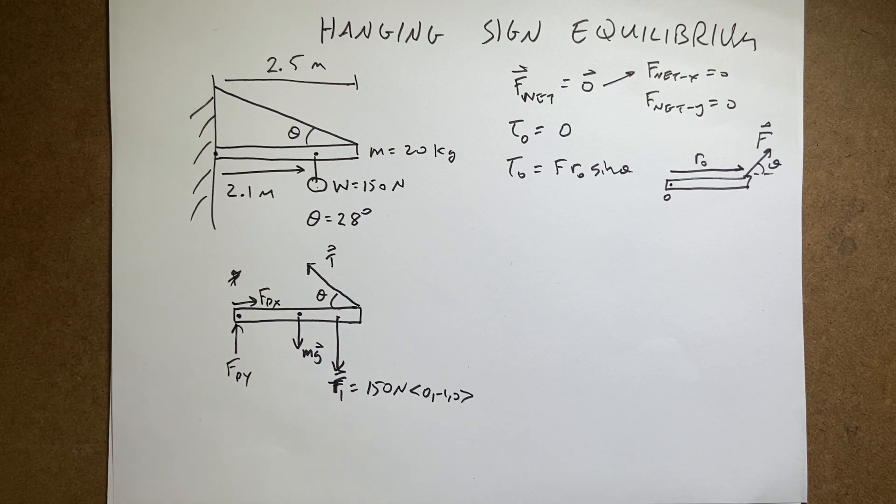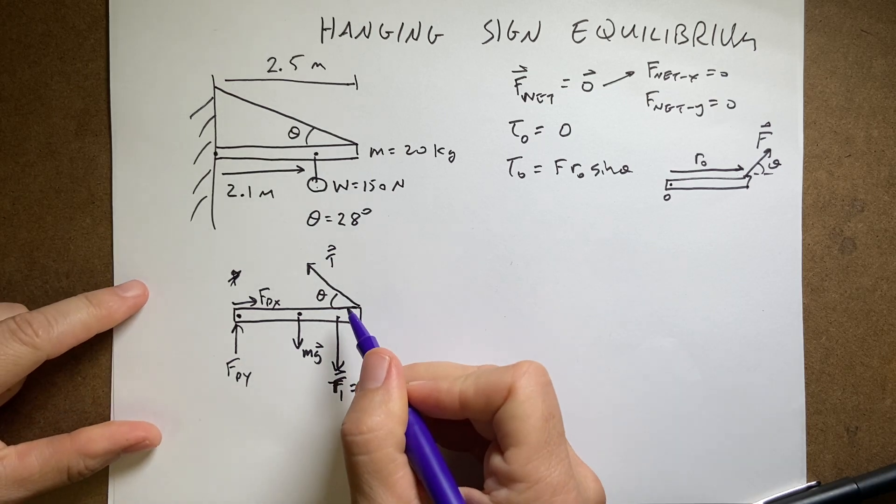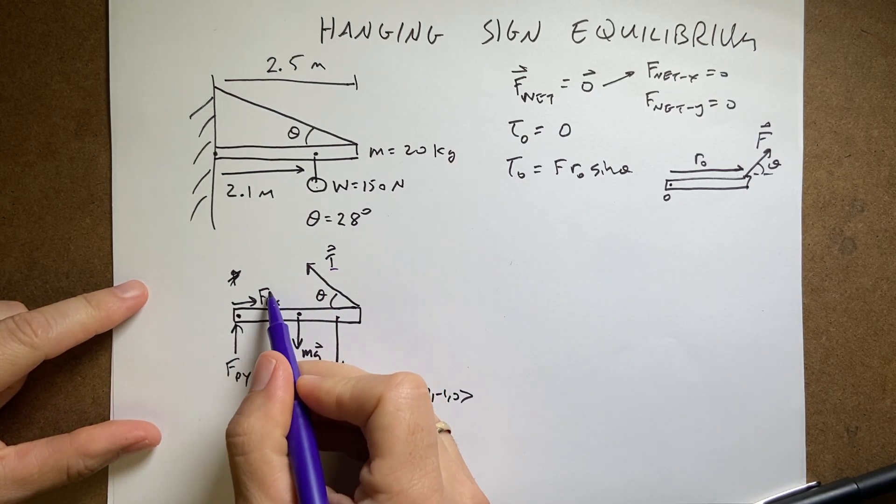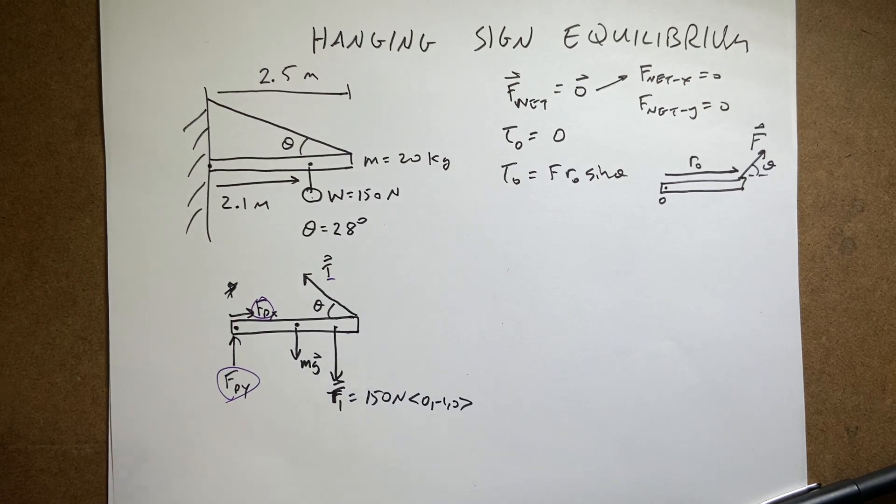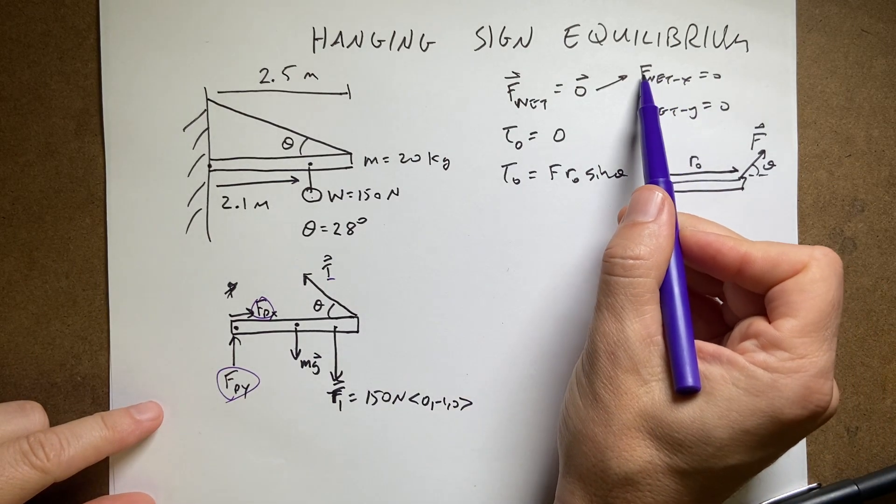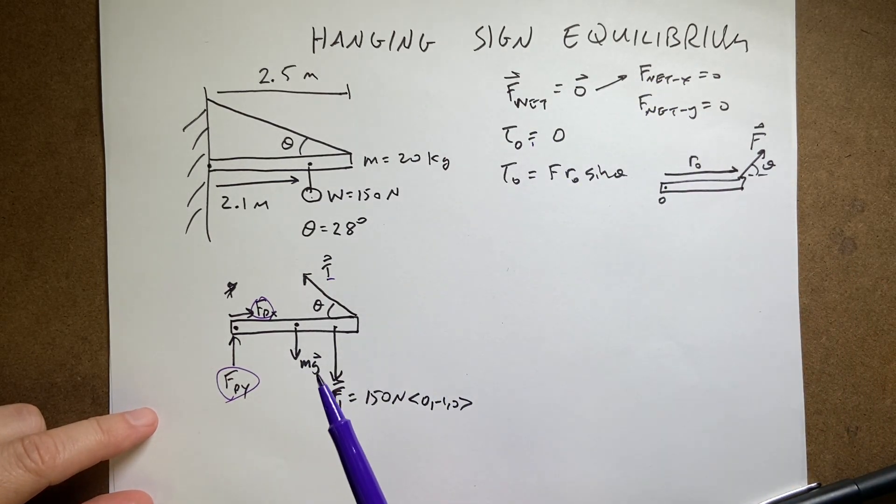Okay. I want to find the tension. Now you see here, how many things do I not know? Values I do not know. I do not know T. I do not know this. I do not know that. That's three things. So in order to fully solve the problem, I would need three equations. Oh my goodness. Look what I have right here. One, two, three equations.